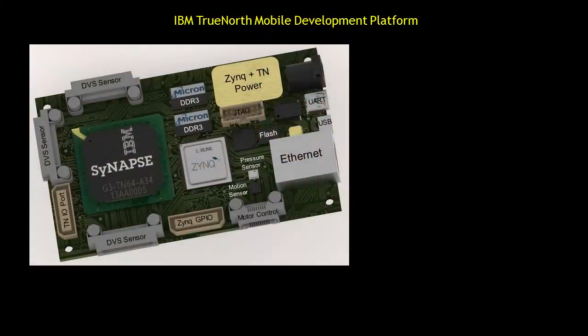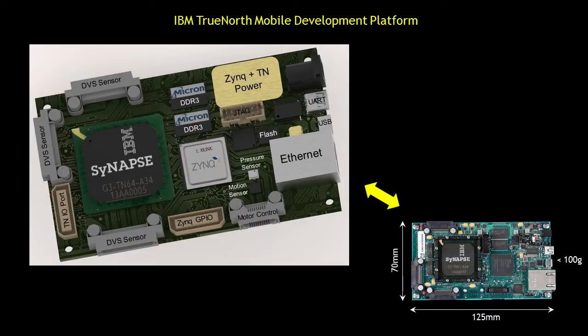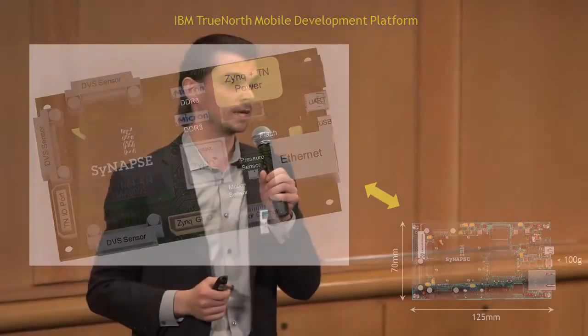To give you an idea of scale for this '1 million neurons in your pocket' device: it's 70 millimeters by 125 millimeters — very compact — and the weight comes in just under 100 grams. The addition of the TrueNorth chip has a negligible effect on power consumption; the board's power consumption is completely dominated by the Zynq SoC.